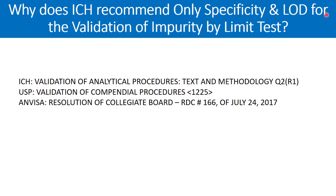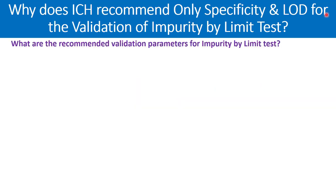If you look at various regulatory guidelines — it can be ICH, USP, ANVISA, or EMA — you will find that all of them have recommended certain parameters to be conducted during different test procedures. For impurity test procedure by the limit test approach, two parameters are recommended: the first one is specificity, and the second parameter is the limit of detection.